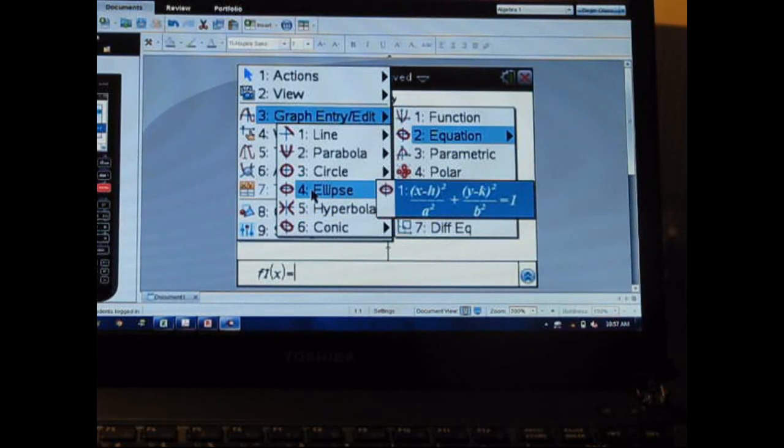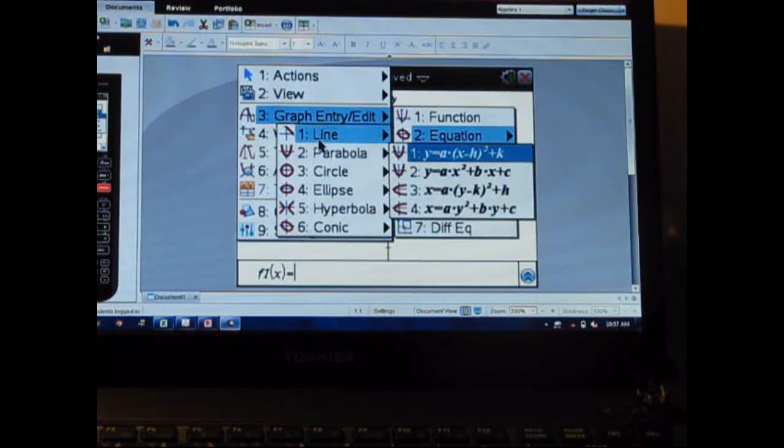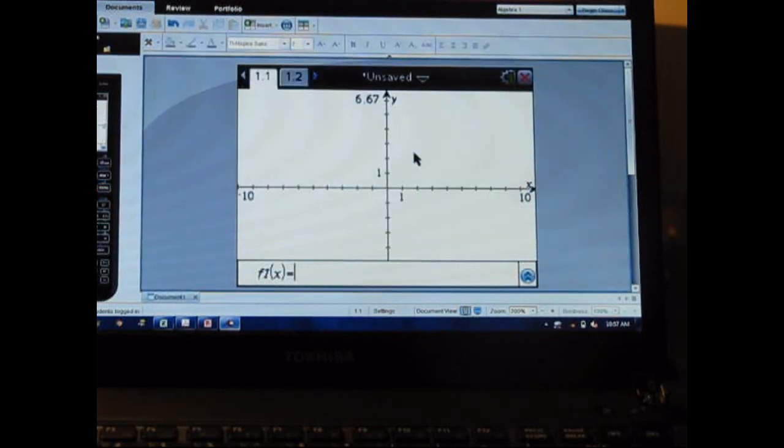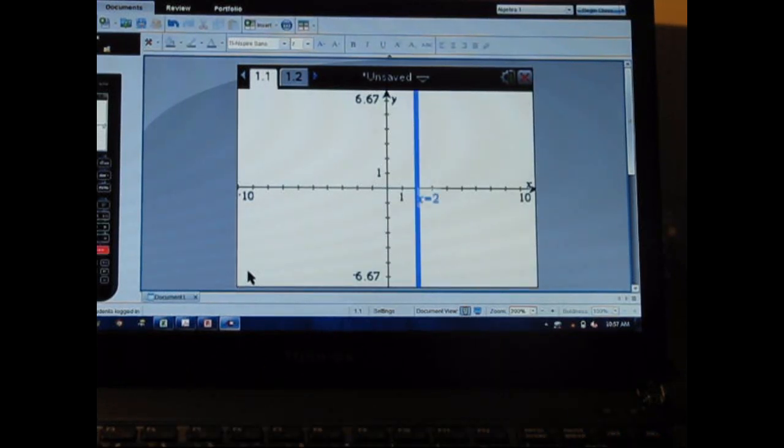So if we add a, let's see, let's go into a line and do something real simple. Let's just do x equals. So one thing we've heard a lot of is just wanting to graph a simple vertical line. So being able to put in x equals 2 and immediately see that result.